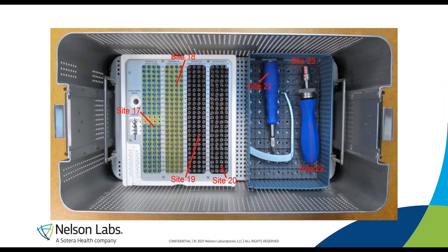Here are examples of areas we might choose for a SAL validation. You can see we've chosen a ratchet handle that has an insulated lumen — these can be very challenging for steam sterilization and are definitely something we would choose as an inoculation location in a tray such as this.